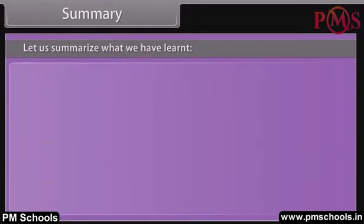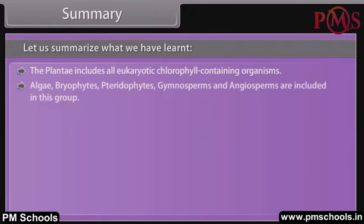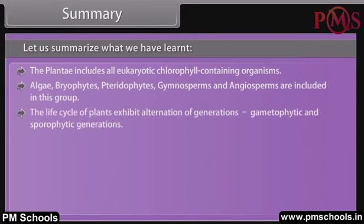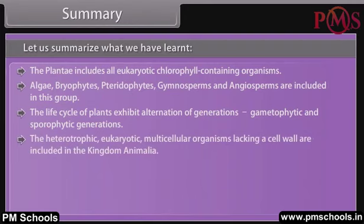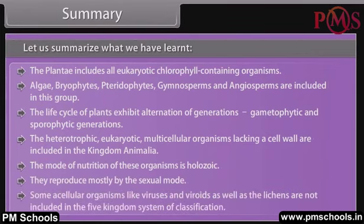Let us summarize what we have learnt. Plantae includes all eukaryotic, chlorophyll-containing organisms — algae, bryophytes, pteridophytes, gymnosperms and angiosperms. The life cycle of plants exhibits alternation of generations: gametophytic and sporophytic generations. Heterotrophic, eukaryotic, multicellular organisms lacking a cell wall are included in Kingdom Animalia; their mode of nutrition is holozoic and they reproduce mostly by the sexual mode. Some acellular organisms like viruses and viroids, as well as lichens, are not included in the five-kingdom system of classification.